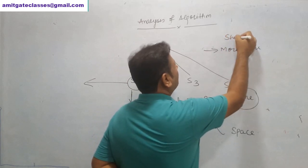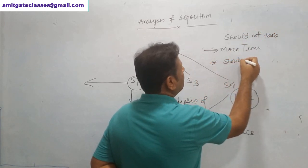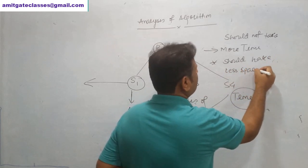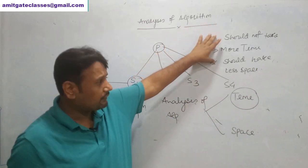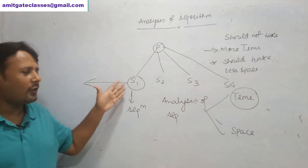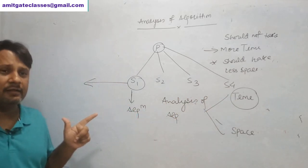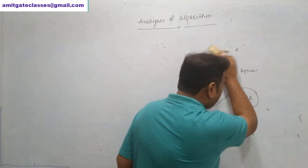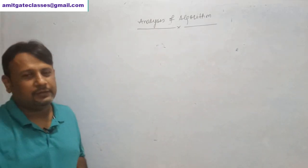Our solution should not take more time and it should take minimum space. If you're writing an algorithm, it should not take more time and should take as minimum space as possible. These are the two aspects — time and space — by which we check the quality of an algorithm. Nowadays space is not a big problem, but time is very critical.